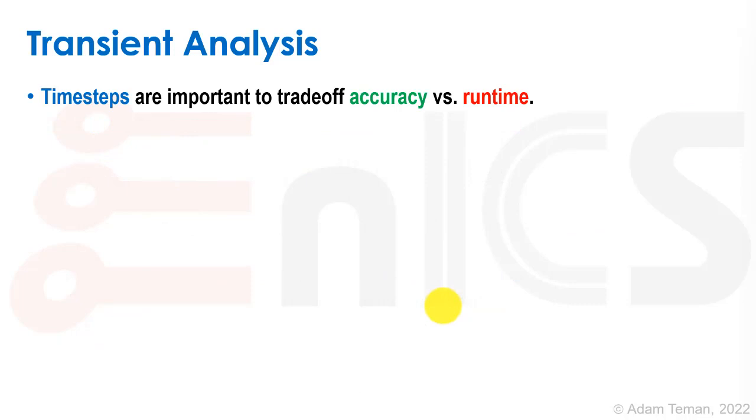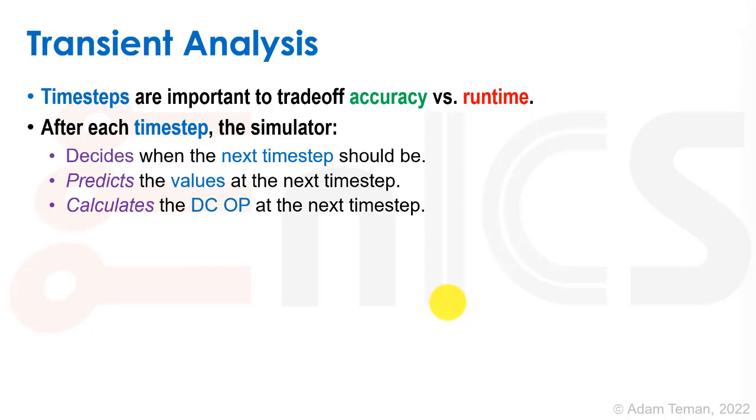Time steps are a very important point to trade off accuracy versus runtime. A time step is the point where we actually go and do convergence again. After each time step, the simulator will decide when the next time step is. It's going to predict the value at the next time step for the guess, and calculate the DC op at the next time step using the Newton-Raphson method.